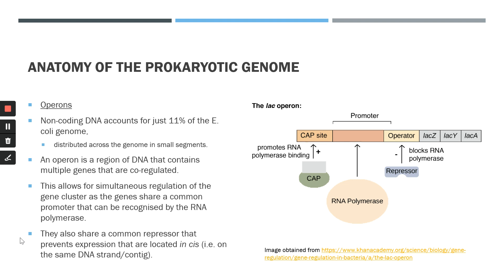If we look at the structure of the lac operon, we can see three lac genes: lac Z, lac Y, and lac A. Upstream of these three lac genes, we have a CAP site, a promoter, as well as an operator region. The CAP site and promoter work hand in hand — the CAP site is responsible for recruiting RNA polymerase to bind to the promoter region. Once RNA polymerase binds to the promoter, this facilitates expression of all three genes: lac Z, lac Y, and lac A. However, if the repressor is bound to the operator, this prevents expression of all three genes by blocking RNA polymerase binding. All of these genes in the operon are co-regulated, and this is a very common feature in prokaryotic genomes.